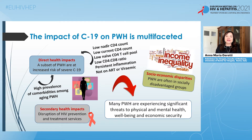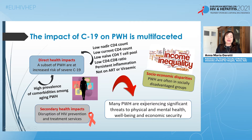The impact of COVID-19 on people with HIV is certainly multifaceted. We need to think about the direct health impacts of the infection and the disease, but also the secondary health impacts related to the disruption of HIV prevention and treatment services caused by the COVID-19 crisis. Many people with HIV are often in socially disadvantaged groups, and therefore socioeconomic disparities are exacerbated by the crisis, leading to significant threats to their physical and mental health, well-being, and economic security.